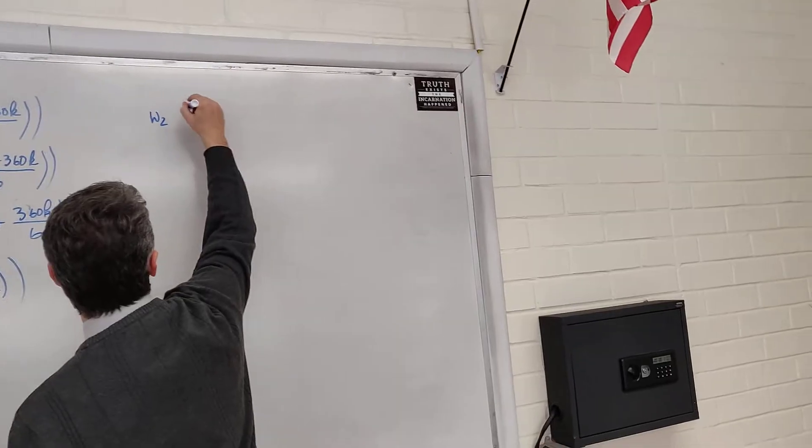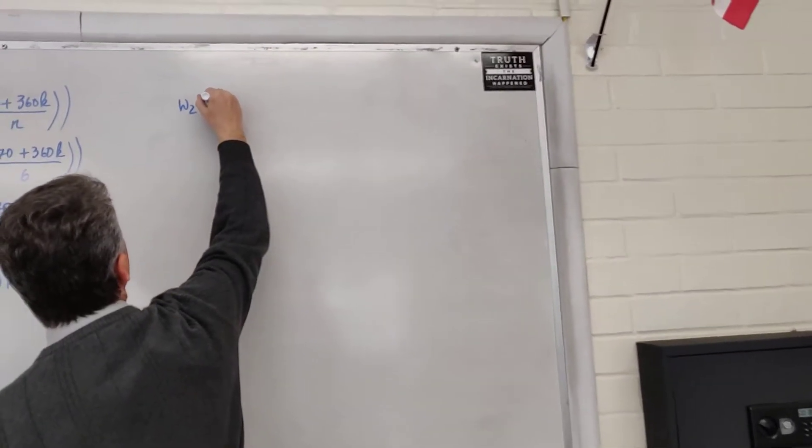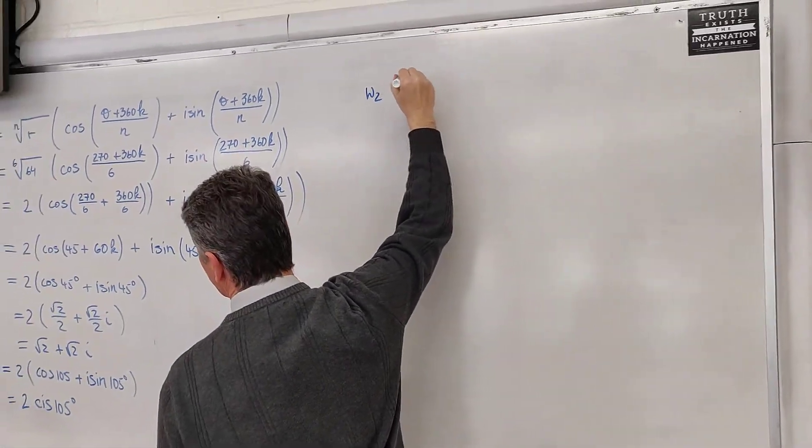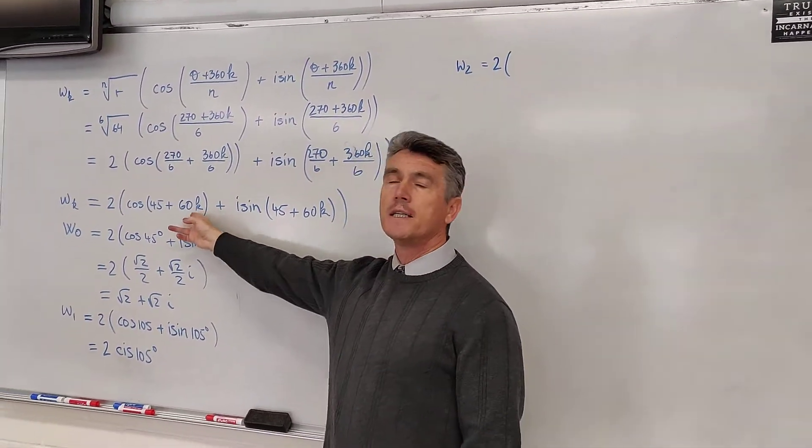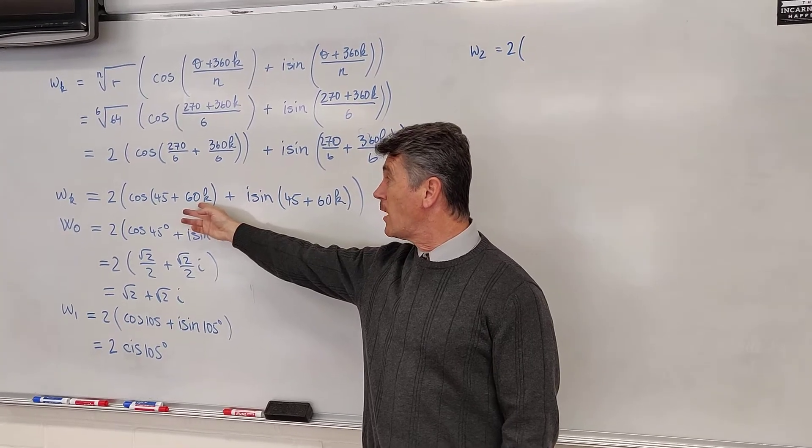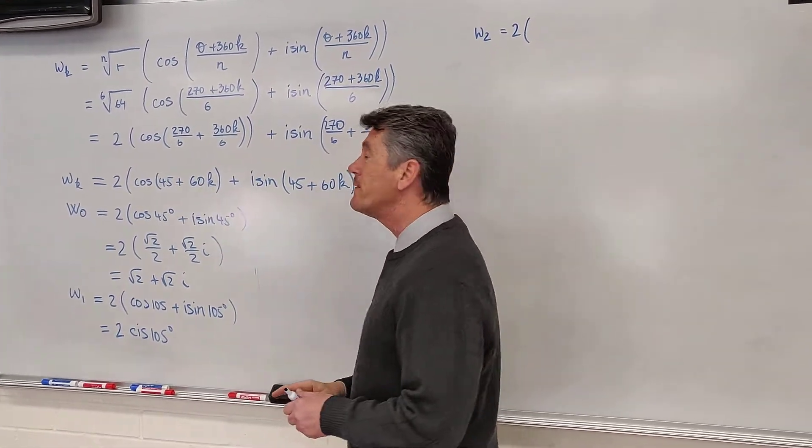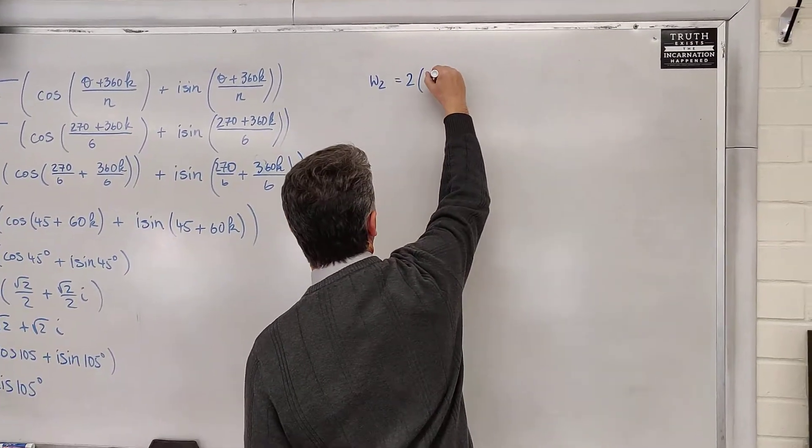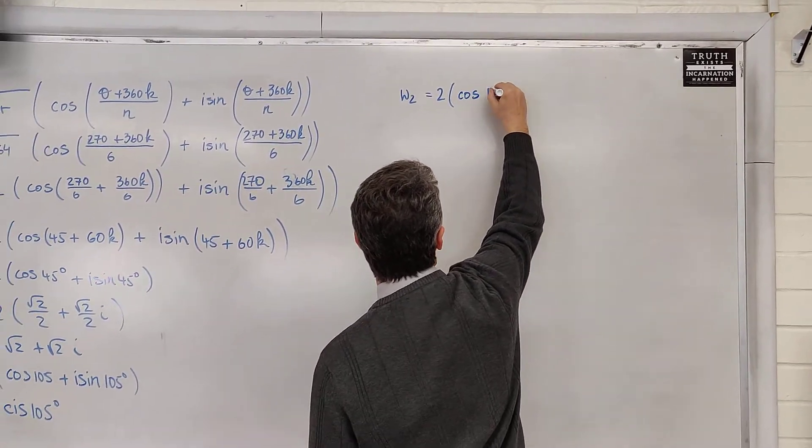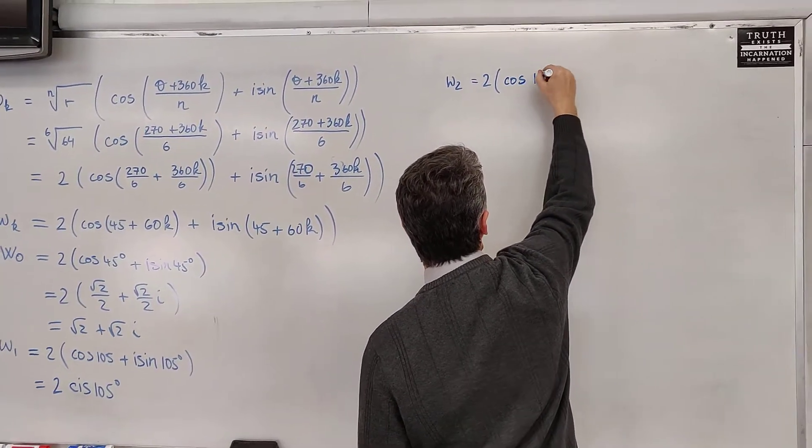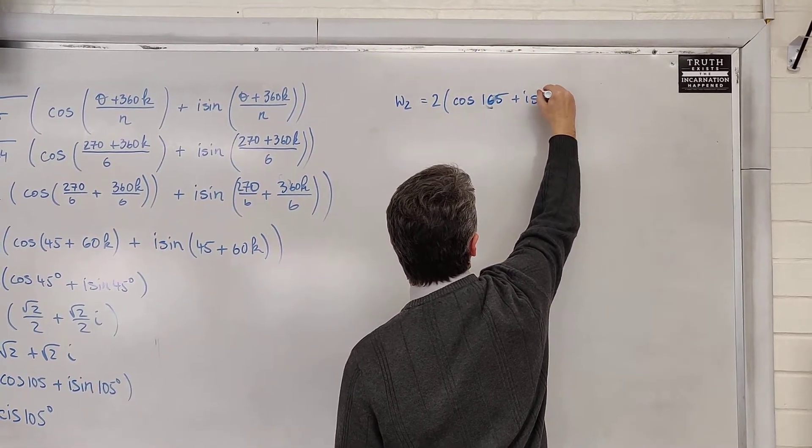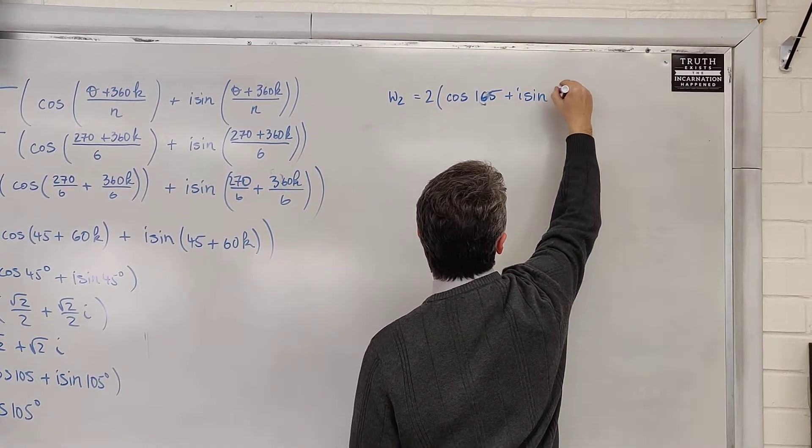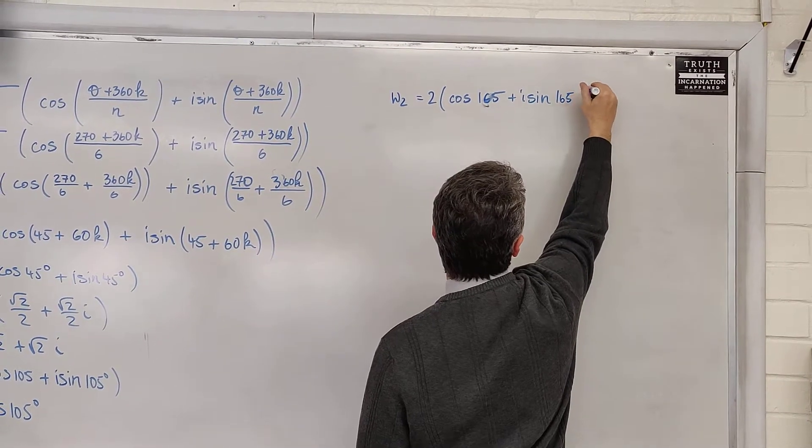W sub 2. W sub 2 is going to be equal to 2. This time, we replace k by 2. 60 times 2 equals 120 plus 45 is 165. So, cosine of 165 plus i sine of 165.